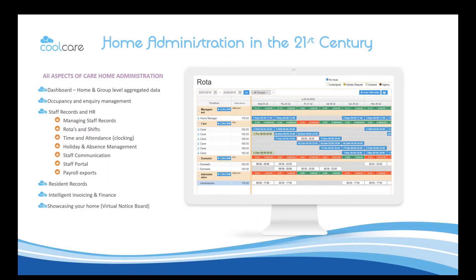You have resident records within the system, keeping records of the payers, fee contracts, what room individuals are in, ledgers for extras, and any ad hoc additional expenditures. You've also got intelligent invoicing and finance, which collates all that information and sends out invoices and transfers data to your payroll system such as Sage.